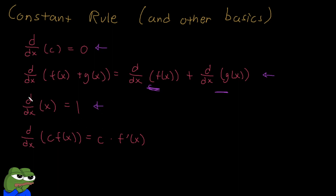This line says that if you take the derivative of just the variable x, you just get 1 — it's always like that. And finally, this line is our constant multiple rule. So if there's a constant in front of another function, that just equals the constant multiplied by the derivative of that function.